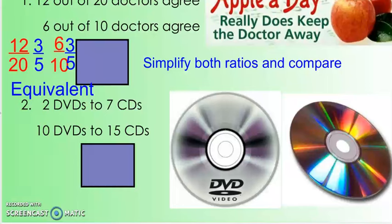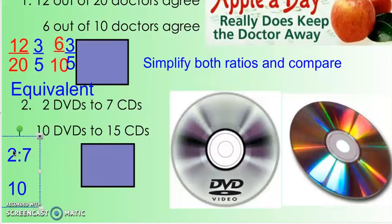How about 2 DVDs to 7 CDs? And notice the wording. It says TO, so these are ratios. This is not a total. So I can create a ratio of 2 to 7, and then 10 DVDs to 15 CDs, 10 to 15. And is 2 to 7 in simplest form? Yes, it is.